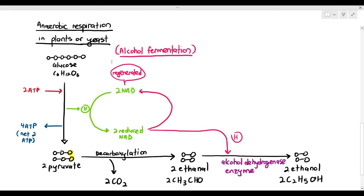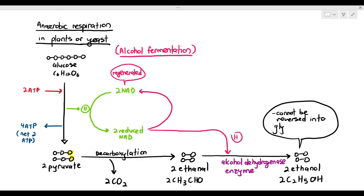In lactate fermentation, the lactate can be transported to the liver and converted back into glycogen or pyruvate. But ethanol is a bit of a problem because it cannot be reversed back into pyruvate. This is bad for plants because if they have too much ethanol, it's too toxic — the plants or yeast will not become drunk, but the cells will die if there is too much ethanol inside.